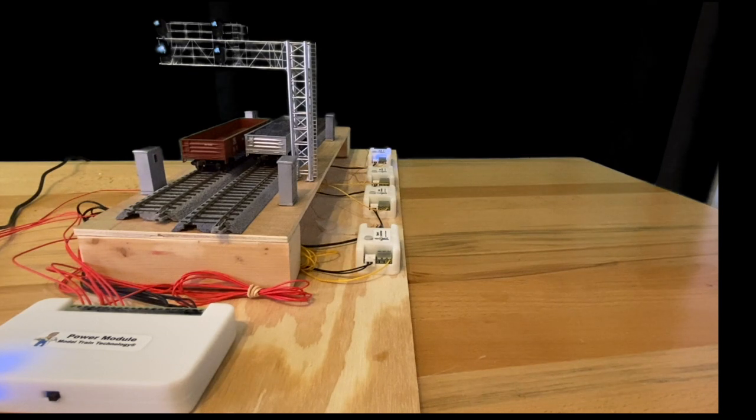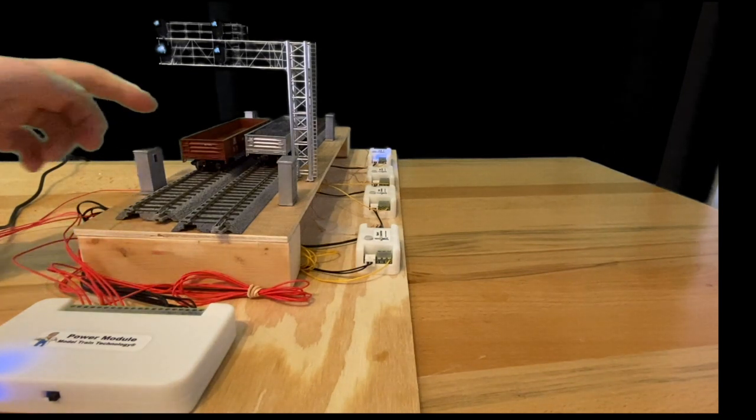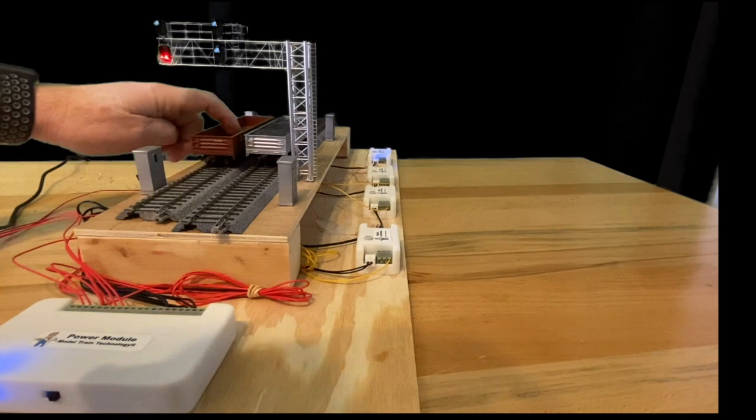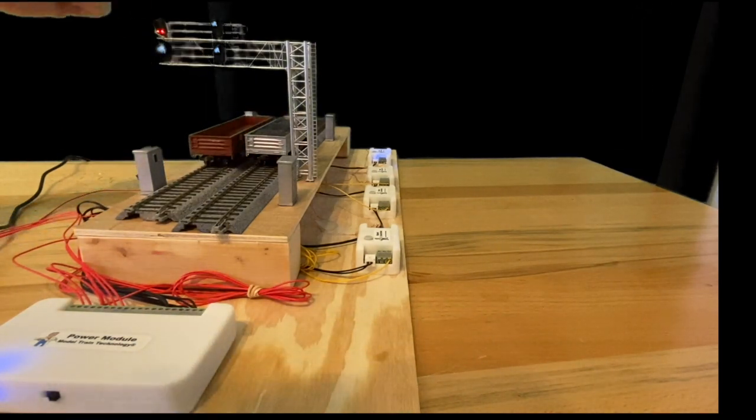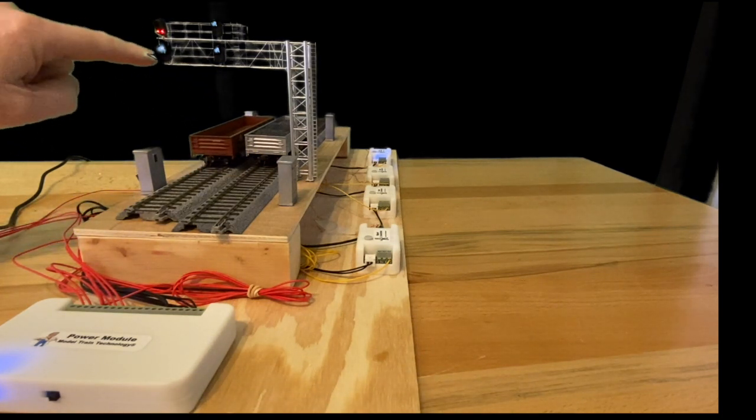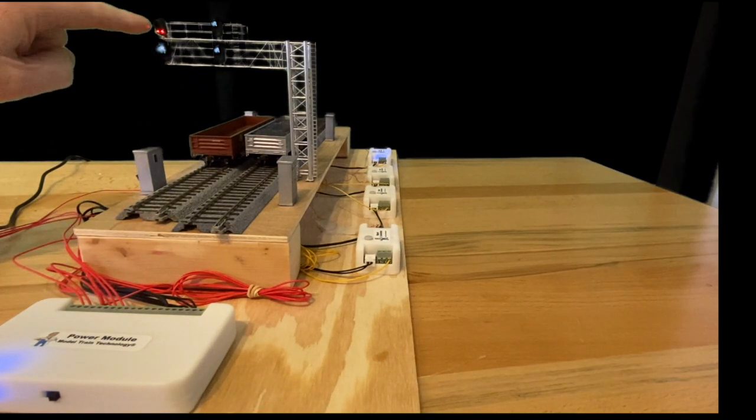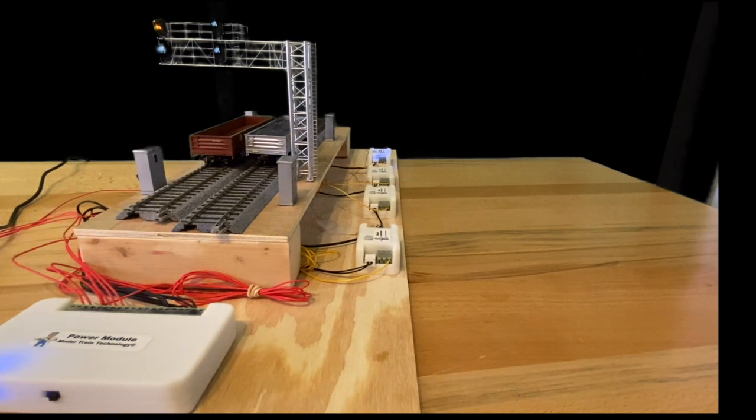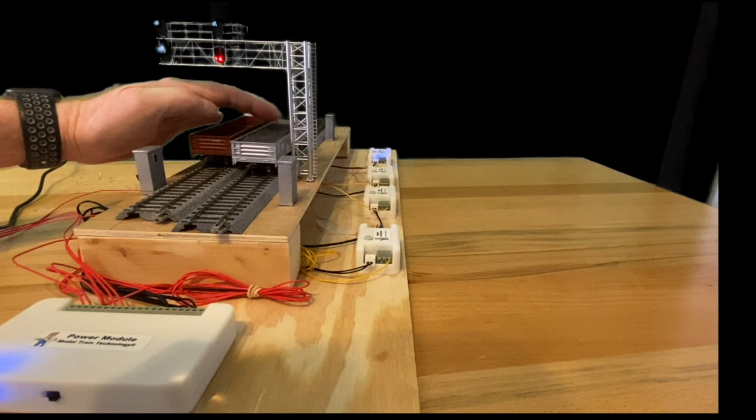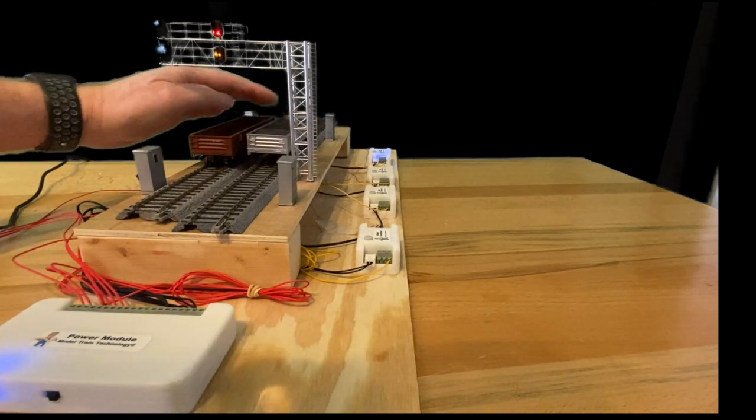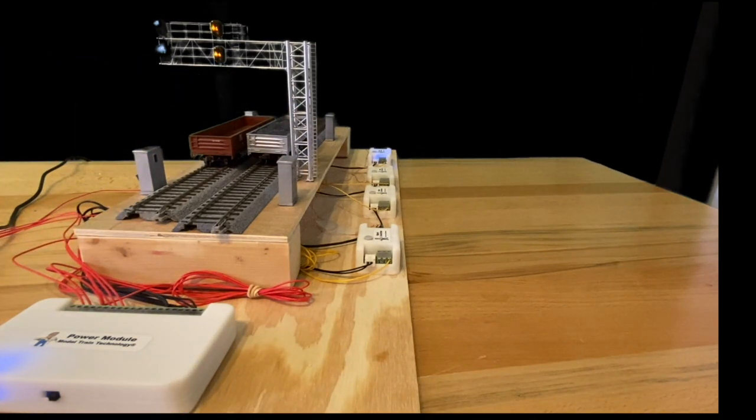The way I have this set up is the train will hit the first sensor, continue on, hit the second sensor, and they will go through their paces. This one went very fast all the way back to green. This one will go a little bit slower, and we can adjust that on the signal controller. You can see the signals going pretty quickly through their paces.